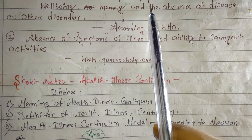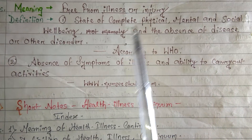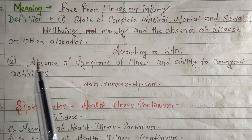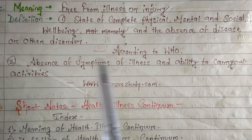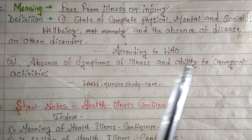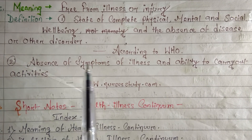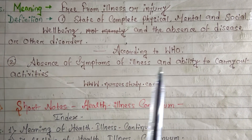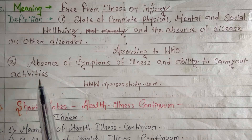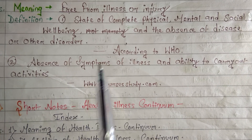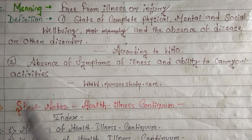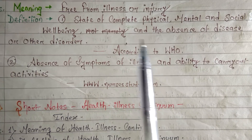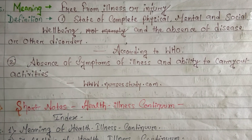If the previous definition is very hard for you, then you can write this definition also: it is the absence of symptoms of illness and the ability to carry out activities — our daily life activities like going to work, coming home, cooking, eating, going out with friends. When we are able to do all that, that state is called health, or being healthy.